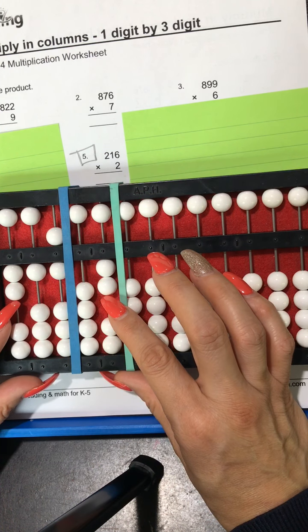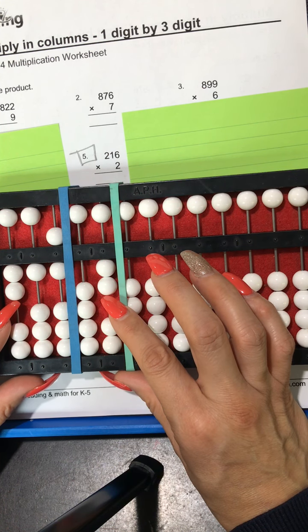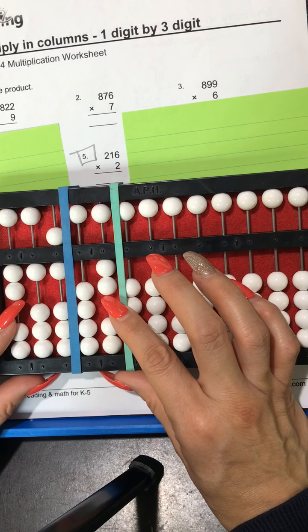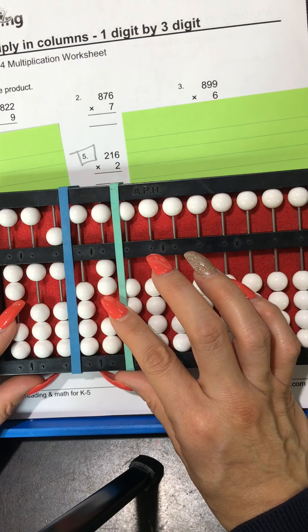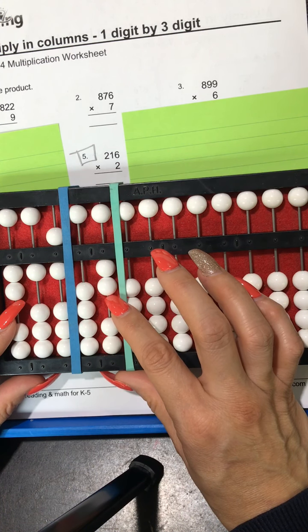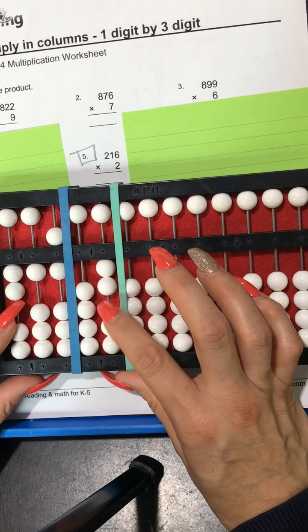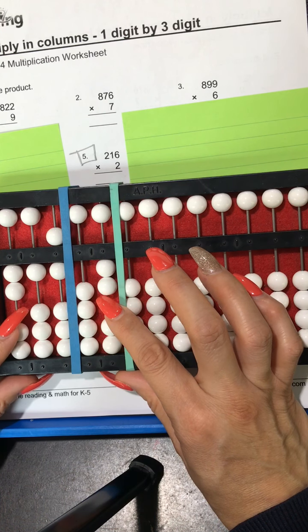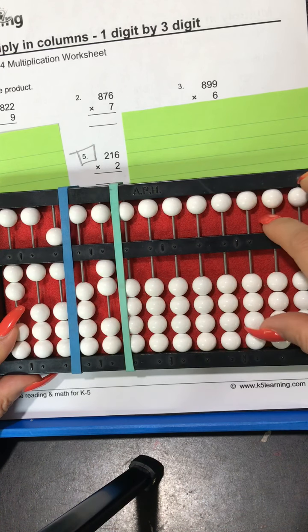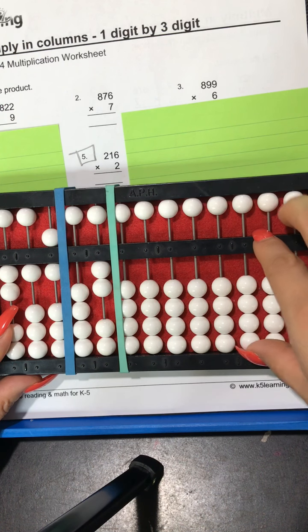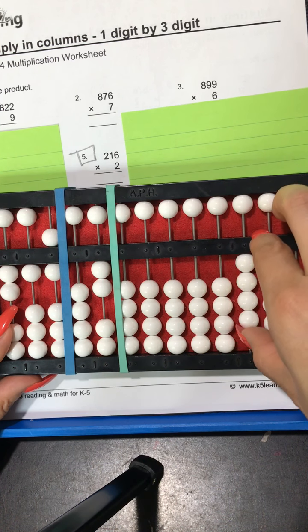So 2 times 2 is 4 but because it's 200 don't forget the two zeros because 200 is usually two zero zero, right? So now we need to remember to use or don't forget to add those zeros. So 2 times 2 is 4 because it has two zeros we need to add two zeros.